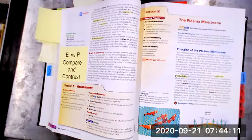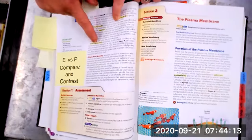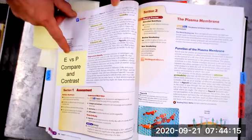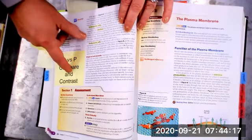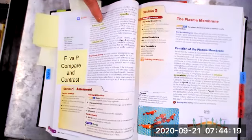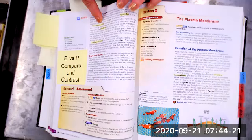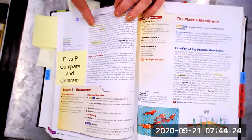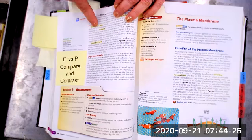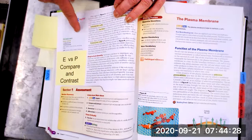These are called eukaryotic cells and prokaryotic cells. In my sticky note, I have an E versus P compare and contrast, so I'd like to know what makes something a eukaryotic cell and what makes something a prokaryotic cell, and you give some examples. I will tell you that you are made up of eukaryotic cells.